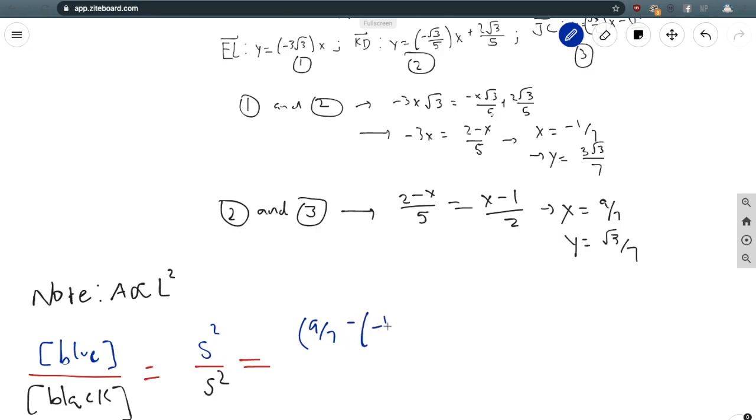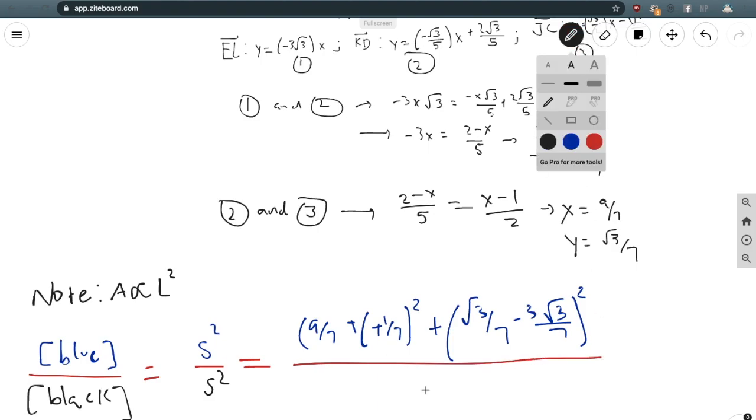For the x, the distance is 9/7 minus (-1/7), which is the same as adding the coordinates squared, plus (√3/7 - 3√3/7)². The reason we don't have to take the square root in this case for the distance formula is because we want the ratio of the areas, so we want to find s². Remember, s is the same thing as distance in this case, so we don't need to square root it since we want the square value anyway.